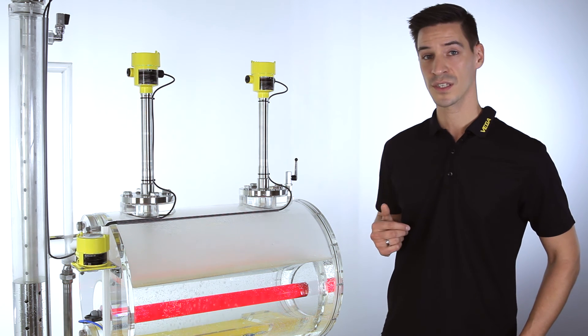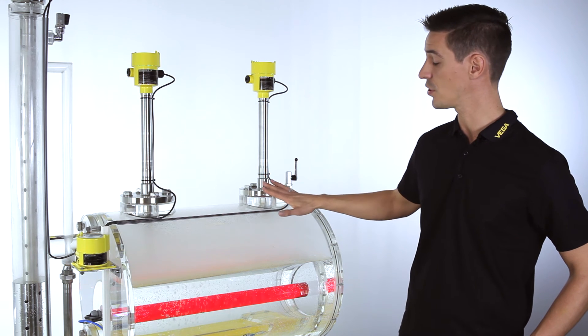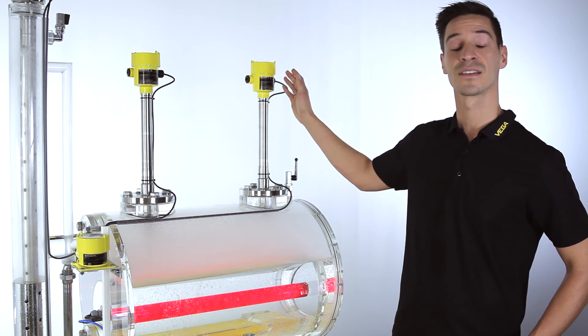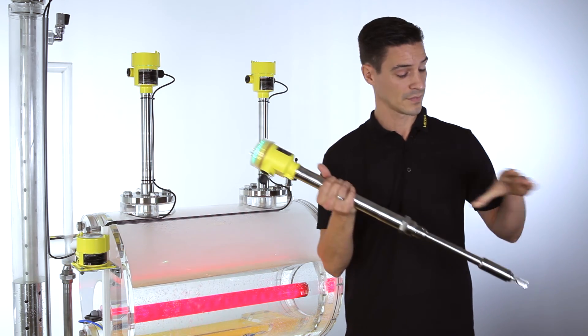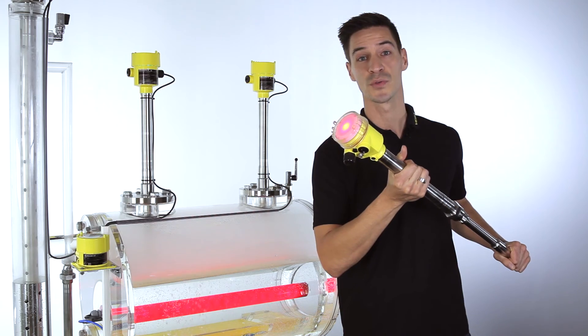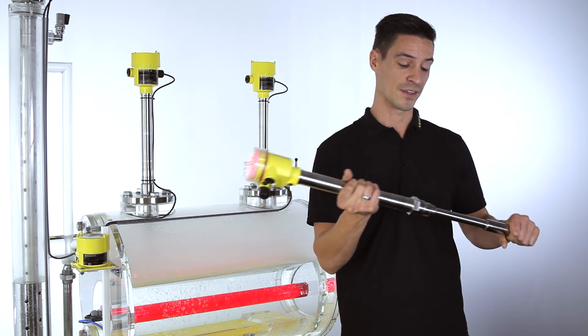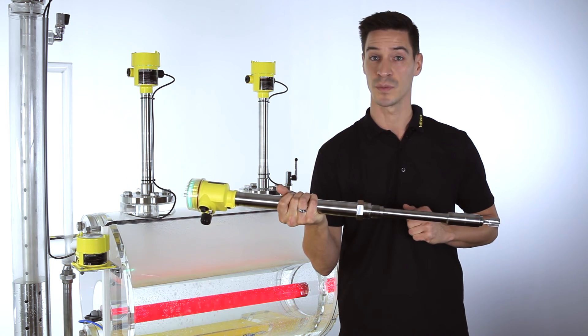The VegaSwing 66 requires no adjustment. You just have to install it and realize the electrical connection. As soon as the level covers the fork, a switching signal will be created. Thanks to the version with tube extension, it is possible to detect levels up to three meters.